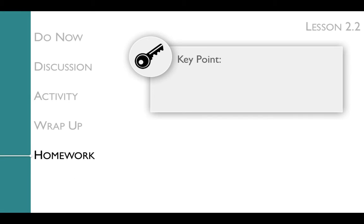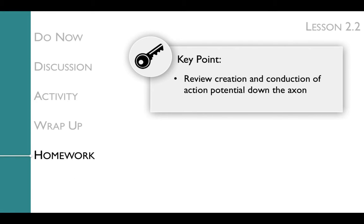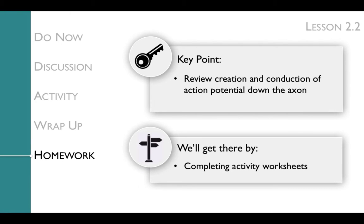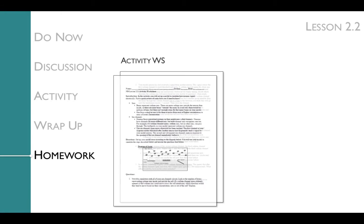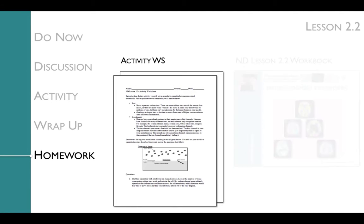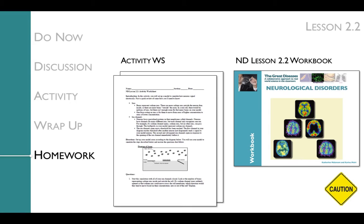The key point of the homework is to review the creation and conduction of the action potential down the axon by completing activity worksheets. The activity worksheet is longer, so some students may need additional time to complete it. If students need help, they can read Lesson 2.2 in the workbook to review the steps of the action potential. Note that the workbook contains all the details included in the differentiated version of this lesson, so you may want to warn students that their workbooks will have some additional details.